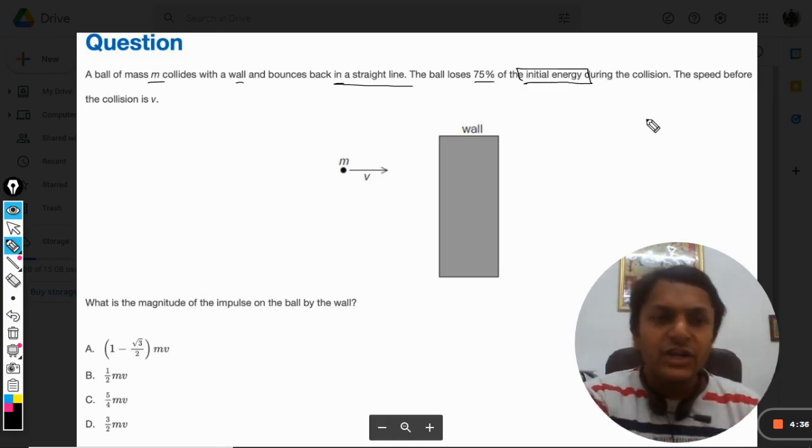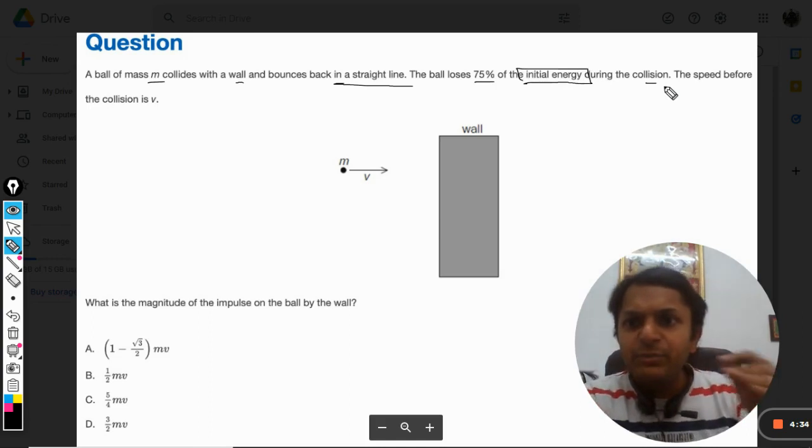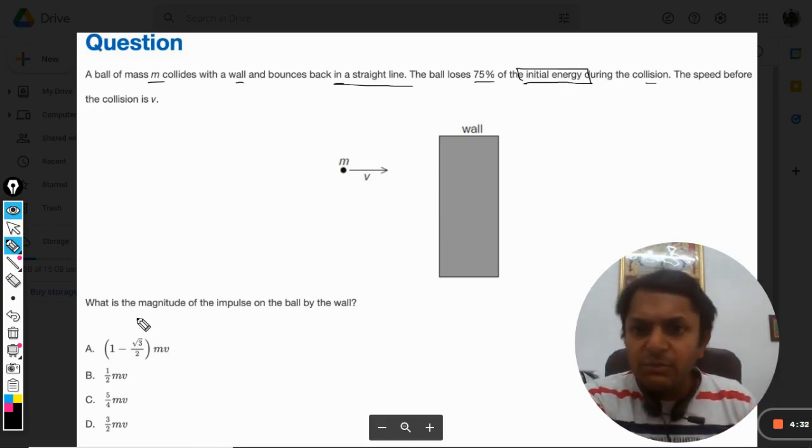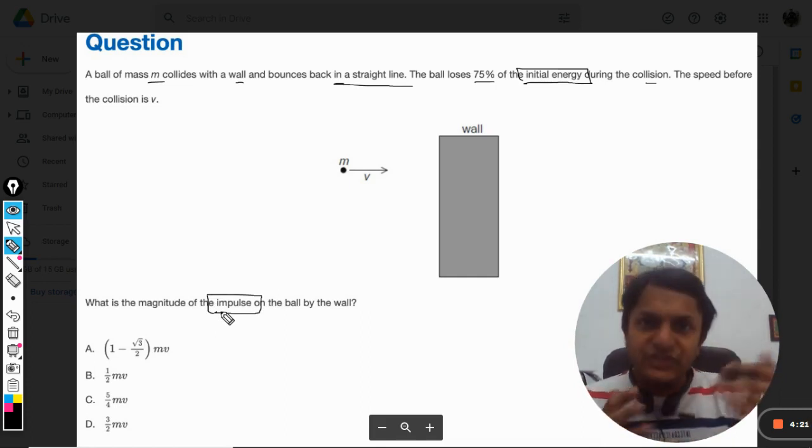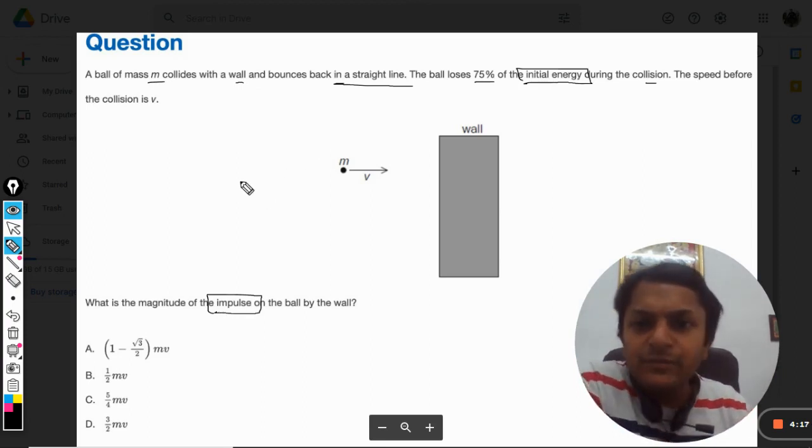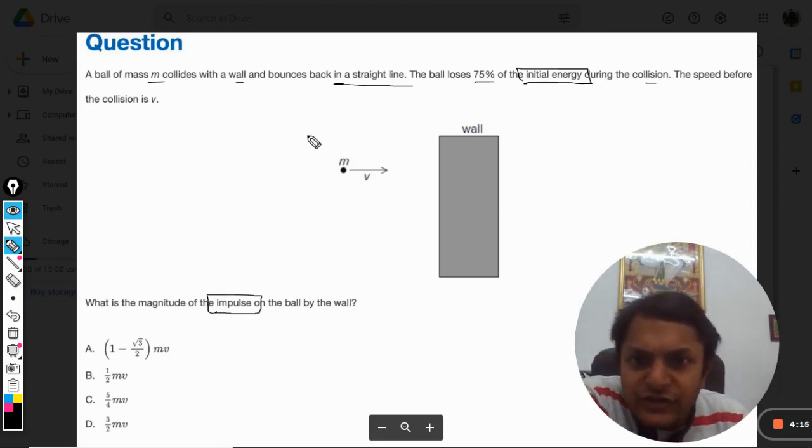The speed before the collision is v. The magnitude of the impulse on the ball by the wall will be what? That's a very beautiful question. It is having a couple of steps that we need to follow, so please be careful about this thing.